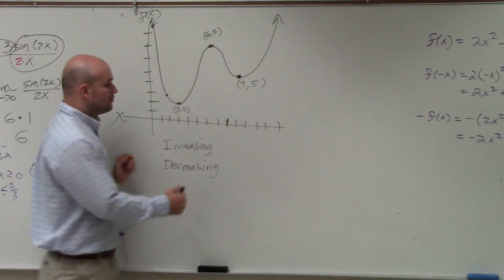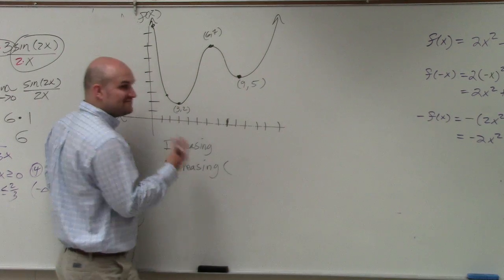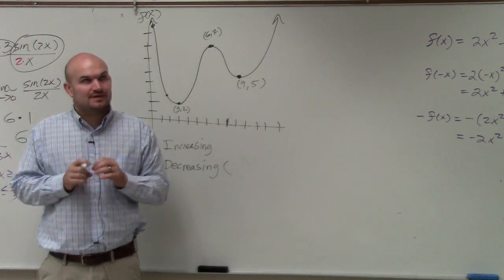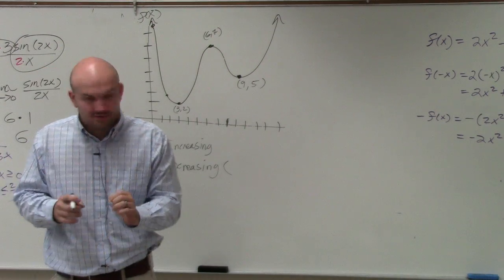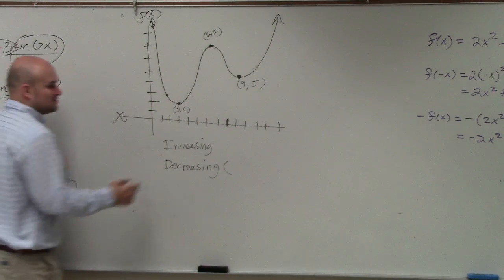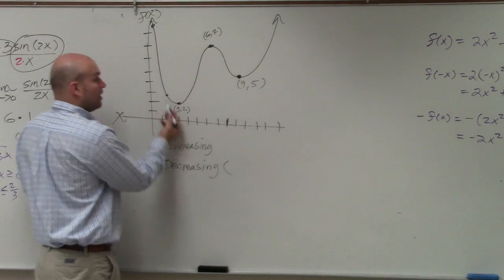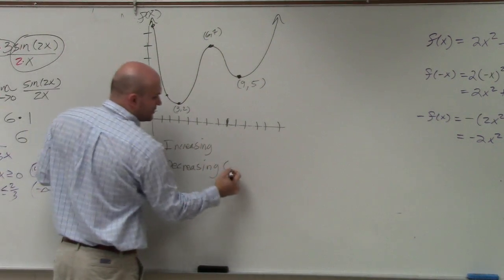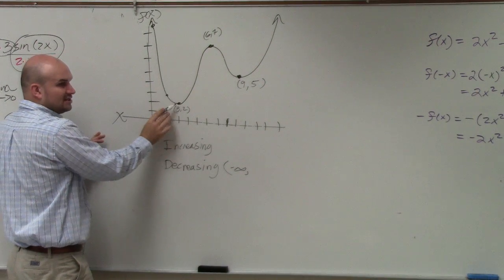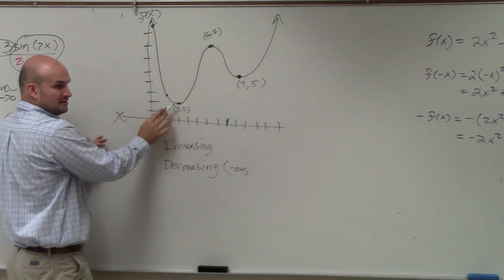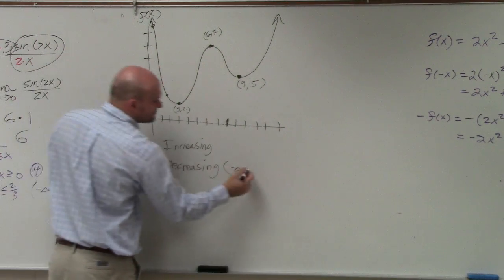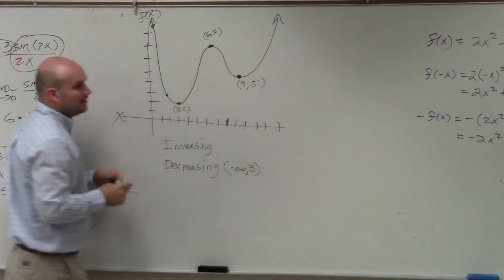Here's how we're going to write that. We're writing the graph as its x values. So from the x values, f of x decreases. So what are the x values that it's decreasing? Well, we don't know how far left it's going to go. So we're going to say negative infinity. So how far does it go until it stops decreasing? How far over does it go? 3.